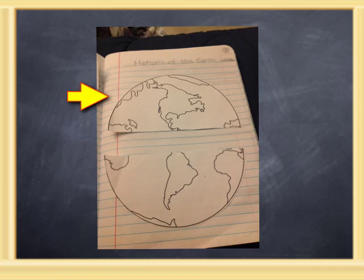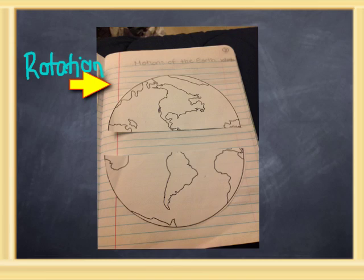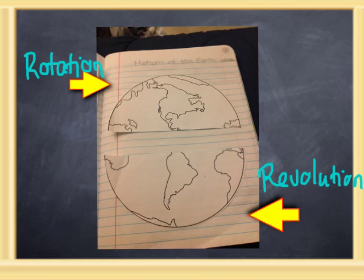The top side is going to be the rotation side. Please write rotation where the arrow is pointing to. The bottom side is going to be the revolution side. Please write revolution where the arrow is pointing to. Now I'm going to add the axis. Please draw your axis in your ISN like I have it on my page 8.